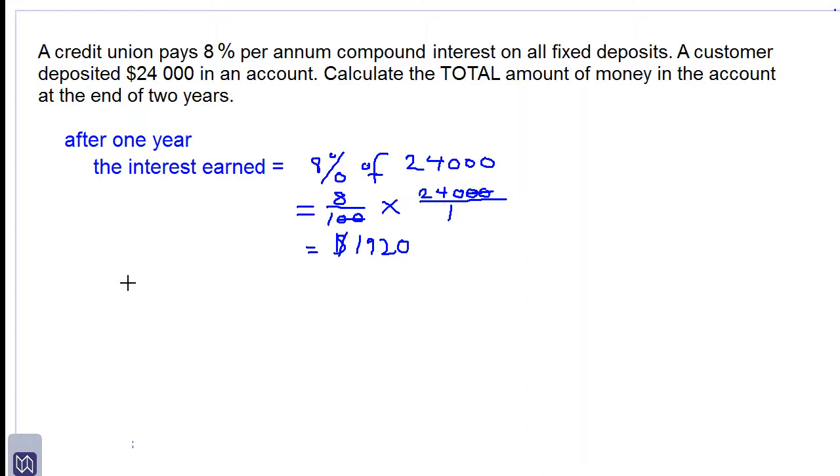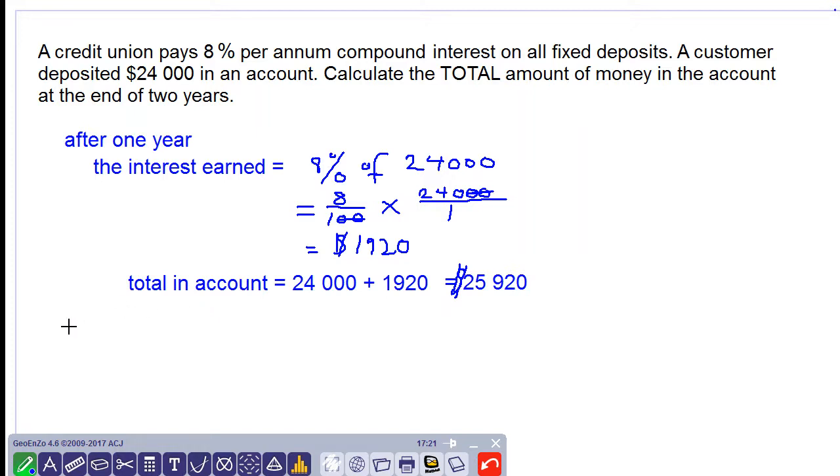Let's look at the amount of money in the account. Now we'll have to add the principal of $24,000 to $1,920. So that will give us $25,920. So at this point in time, after one year, there is $25,920 in the account for this customer.